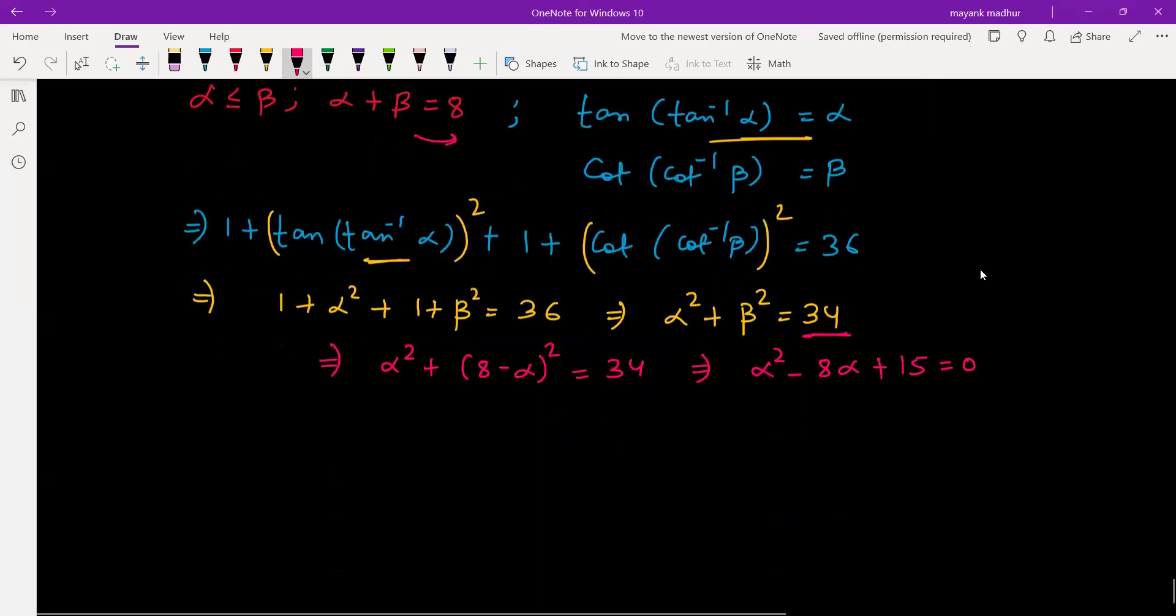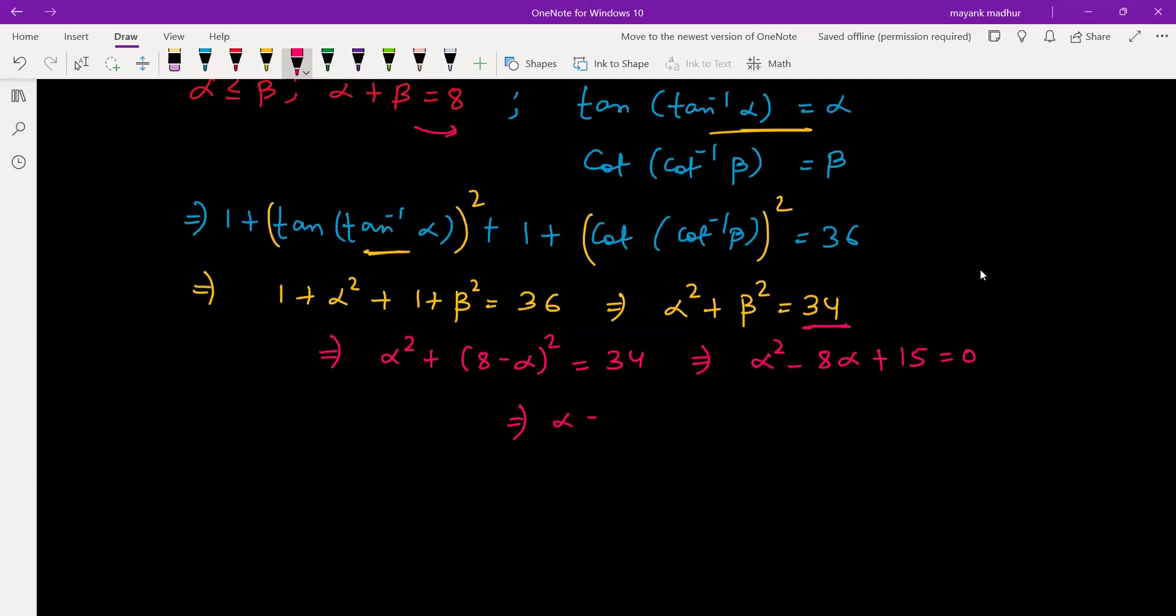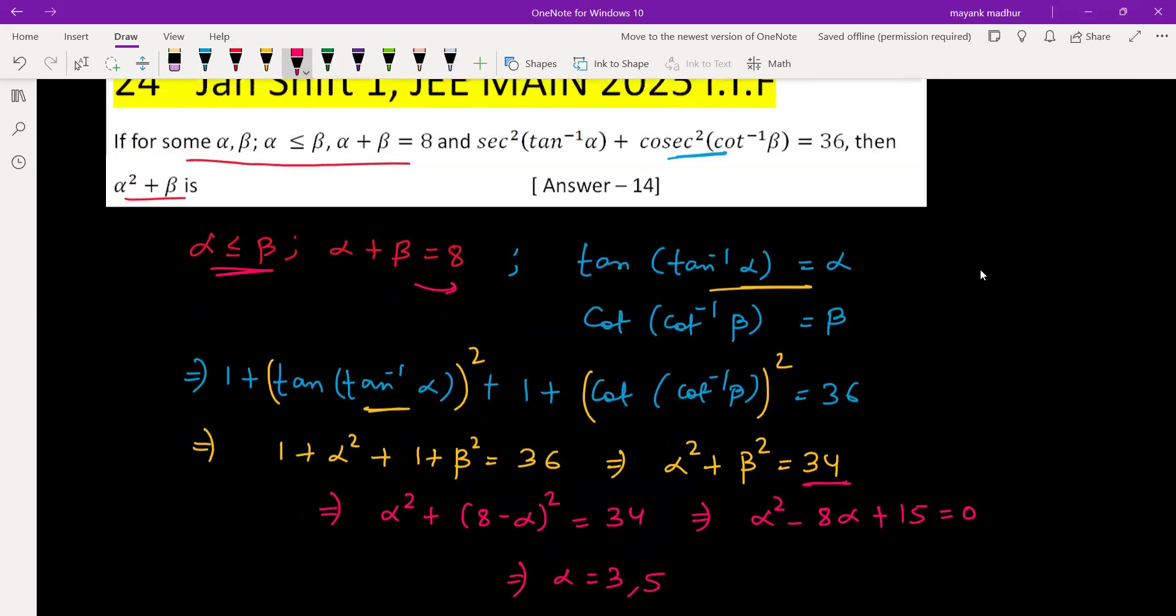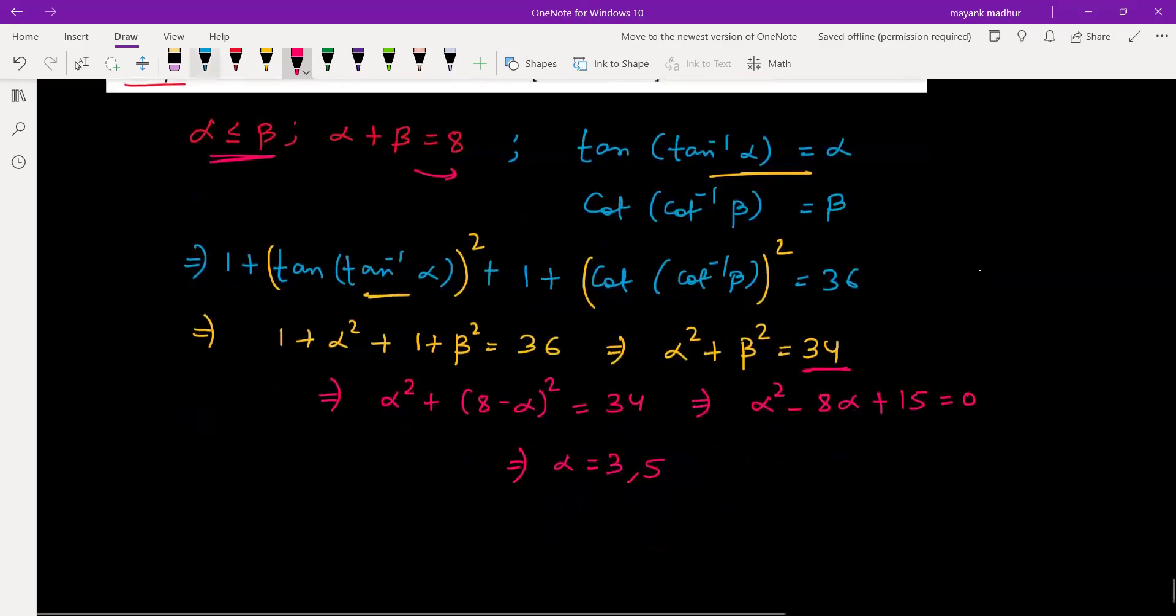We have been given that α < β, so α = 3 and β = 5.